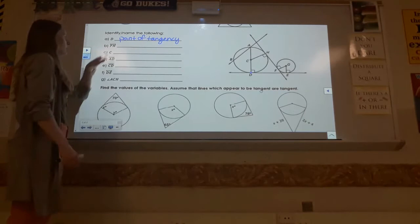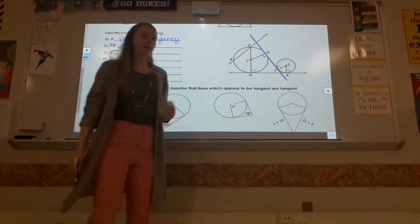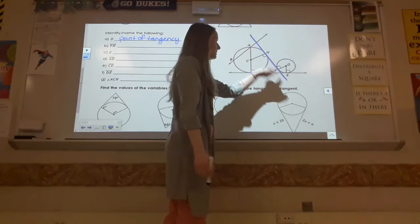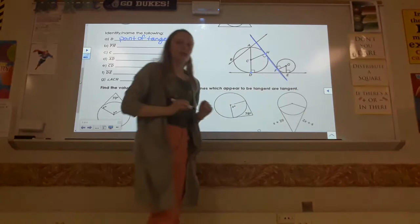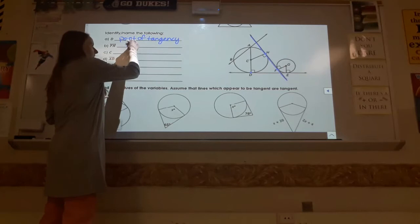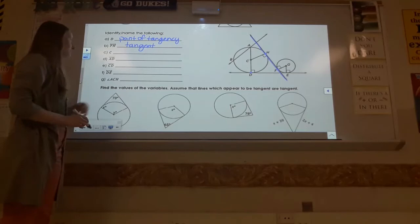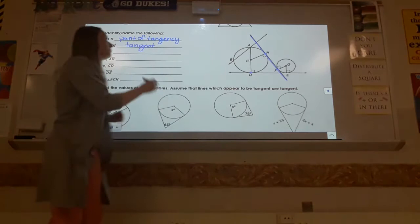Line FH is right here. We could just call it a line, but it's more than that in the context of this picture. This line happens to touch each of these circles in only one spot — here it touches that circle at H, and here it touches the circle at F. If that line only skims right over the top of the circle and only hits it once, we refer to that as a tangent. So FH is a tangent. Point C is located right here in the middle of a circle — we have a special name for that point, it's called the center.